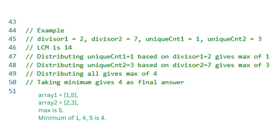Distributing unique count 2 equals 3 based on divisor 2 gives array 2 equals {2, 3, 4}, max is 4. Together, array 1 equals {1, 5}, array 2 equals {2, 3}, max is 5. The minimum of 1, 4, and 5 is 4.